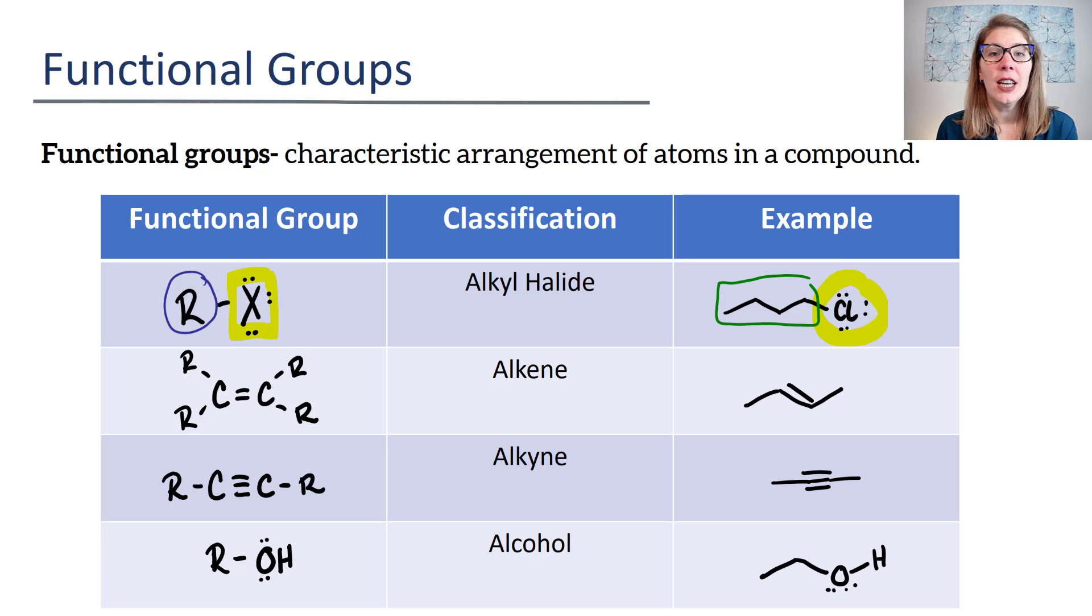For an alkene, your alkene is going to have a carbon-carbon double bond. Attached to that carbon-carbon double bond is going to be a variety of R groups. And those R groups could be hydrogen or they could be a carbon-hydrogen mixture.